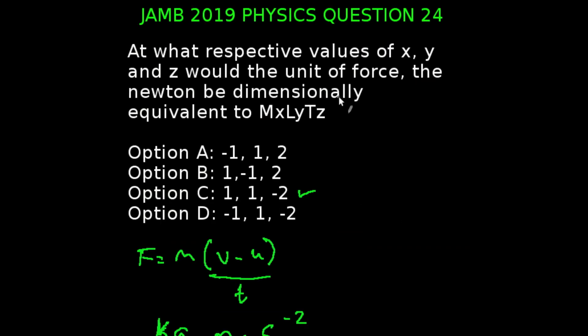We're looking at JAMB 2019 physics examination, question number 24. At what respective values of X, Y, and Z would the unit of force need to be dimensionally equivalent to M raised to the power X, L raised to the power Y, and T raised to the power Z? Correct answer to this question is option C, which is 1, 1, and minus 2. Let's look at that.